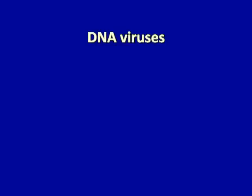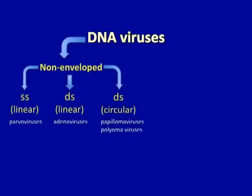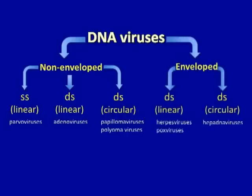Now let's look at the classification of DNA viruses, which is very similar. The non-enveloped DNA viruses have genomes that are single-stranded and linear, as in the case of parvoviruses; double-stranded and linear, as in the case of adenoviruses; or double-stranded and circular, as in the case of papillomaviruses and polyomaviruses. The enveloped DNA viruses include double-stranded linear genomes, as with herpesviruses and poxviruses, or double-stranded circular viruses, such as the hepadnaviruses. That name breaks down into HEPA, indicating hepatitis B, and DNA, indicating it's a DNA virus.